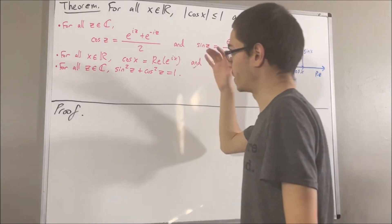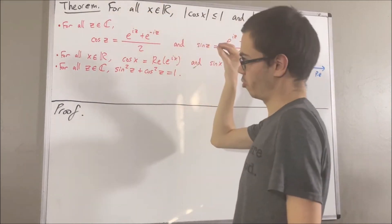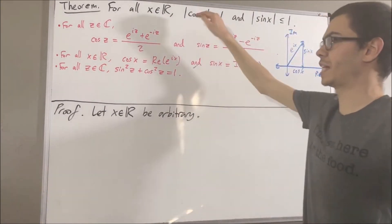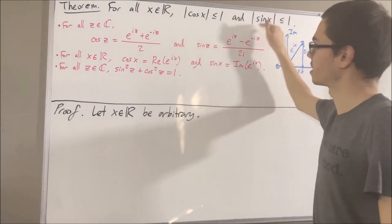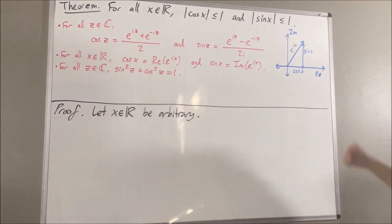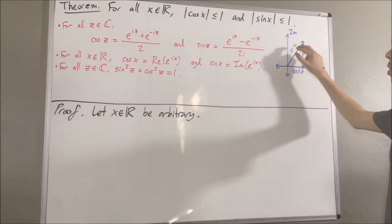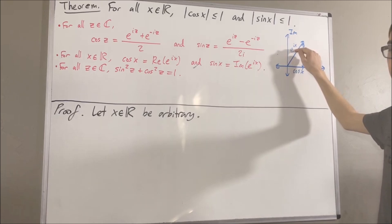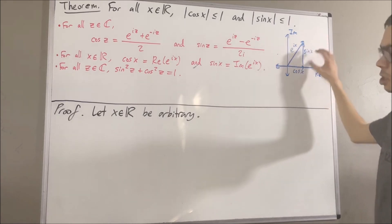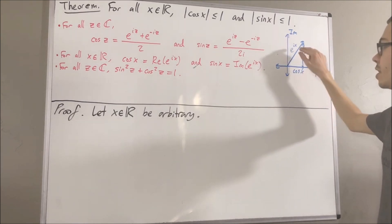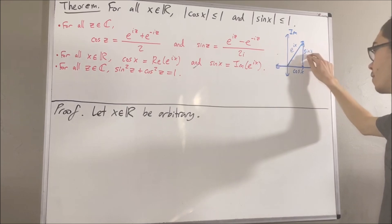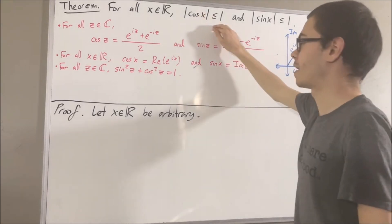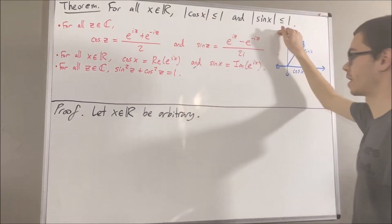The start of the proof: since we're trying to prove a statement about every real number, let's give ourselves an arbitrary real number called x. From here, we want to show that the absolute value of cosine x is less than or equal to 1, and the absolute value of sine x is less than or equal to 1. To show that, we're first going to show that the absolute value of e to the ix is equal to 1. If we can show that, then geometrically, the absolute value of cosine x is less than or equal to the absolute value of e to the ix, and the absolute value of sine x is less than or equal to the absolute value of e to the ix — in other words, the absolute value of cosine x is less than or equal to 1, and the absolute value of sine x is less than or equal to 1.